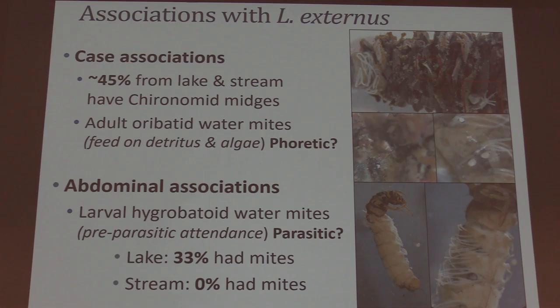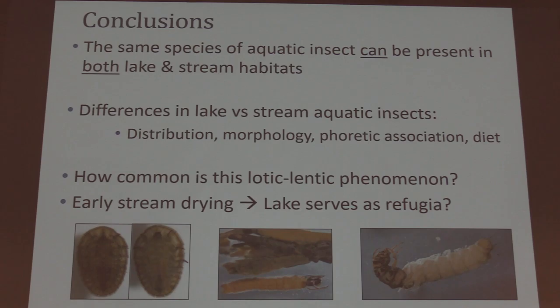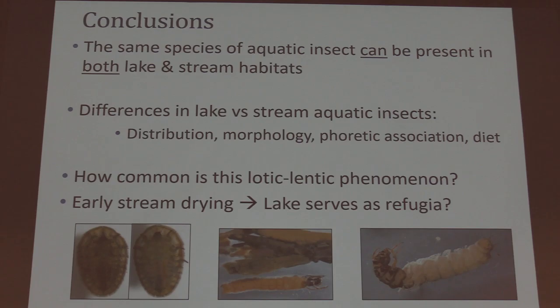To conclude: I did find that the same species of aquatic insects can be present in both lake and stream habitats, and we found differences between lake and stream individuals in terms of distribution, morphology, phoretic associations, and diet. This raises many more questions for me — like how common is this lentic-lotic phenomenon and why is it happening? What could be the advantages? For example, in the Sierra Nevada, as streams may be drying earlier, could lakes serve as refugia for stream species to wait out until climate conditions improve?